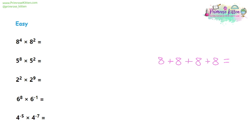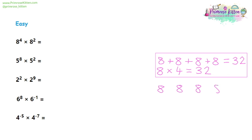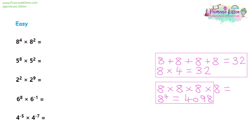Writing out eight plus eight plus eight plus eight is quite long and time consuming — that's eight times four. But eight to the four is a bit like writing eight times eight times eight times eight. Either way we write it down, we're going to get the same answer. Eight to the four is just a shorter, quicker way of writing eight times eight times eight times eight.